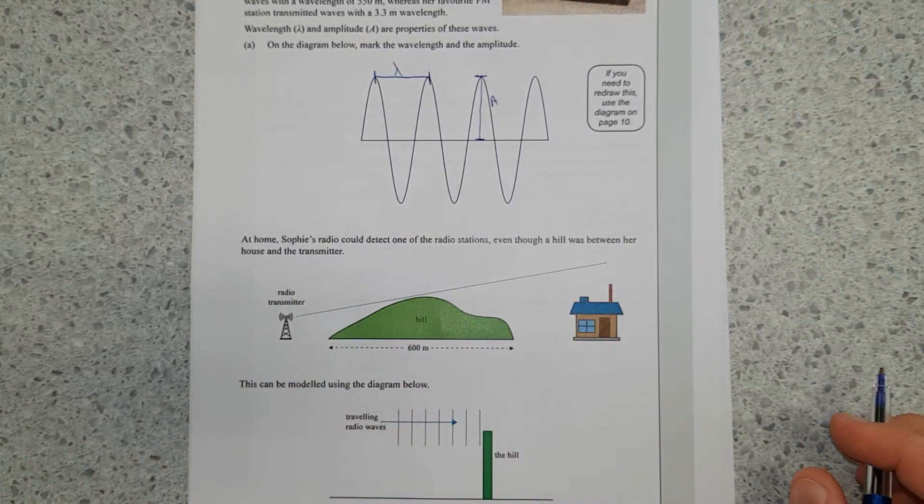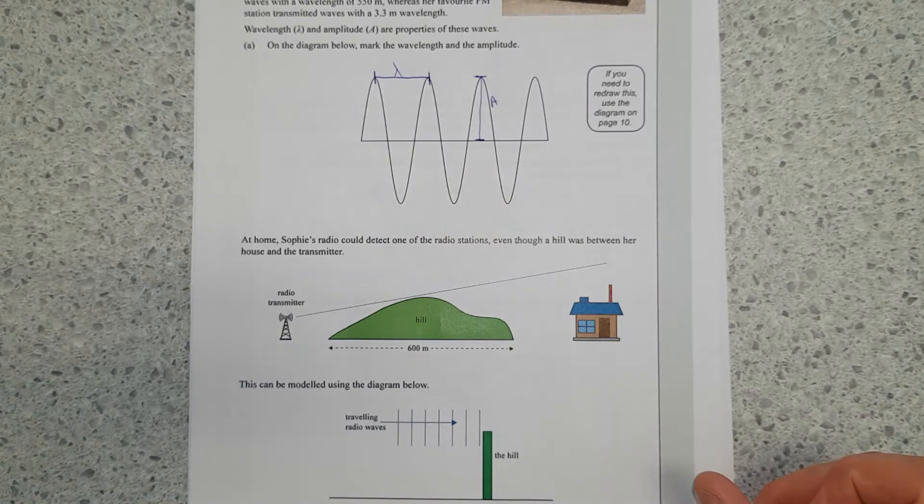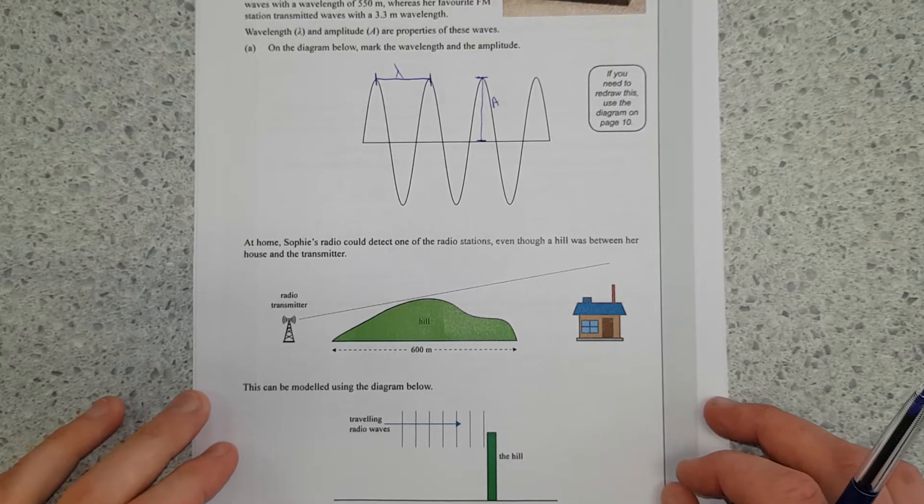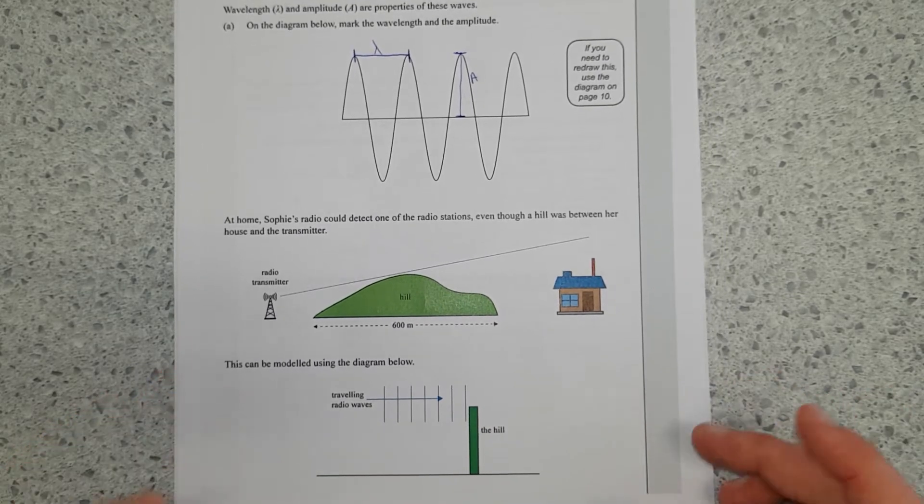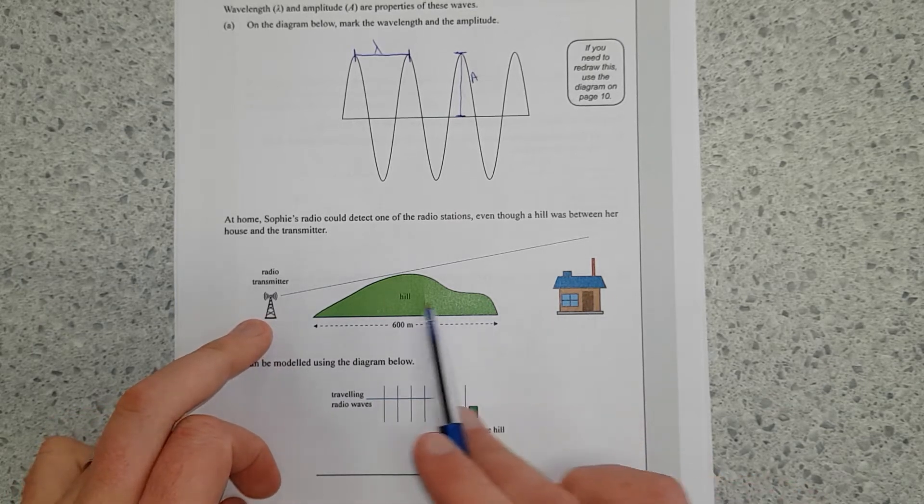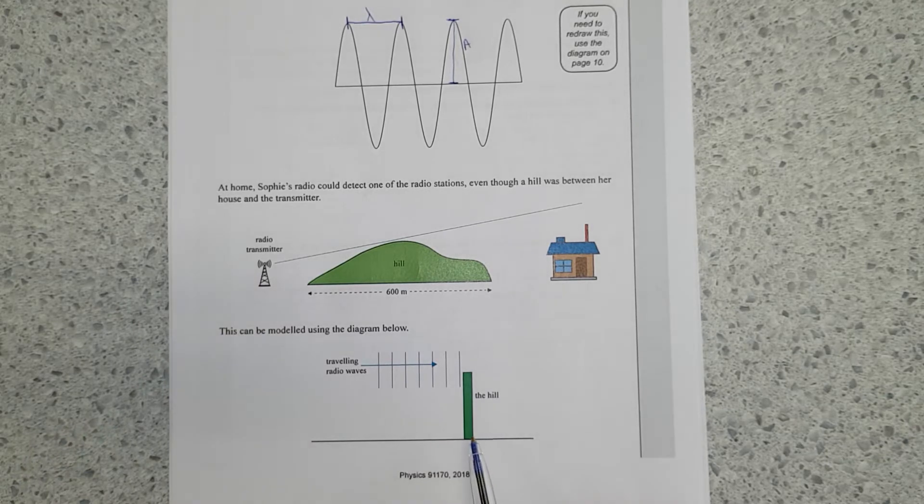Anyway, enough of me rambling. At home, Sophie's radio could detect one of the radio stations, even though the hill was between her house and the transmitter. This can be modeled using the diagram below. So you've got transmitter, house, hill in the middle, radio waves, and the hill. I'm going to fill this picture in.